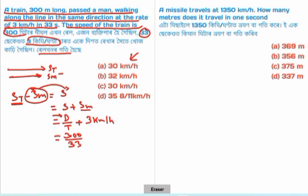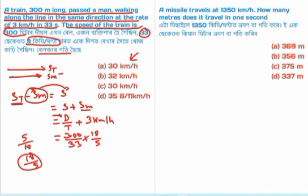To convert meters per second to km per hour, multiply by 18 divided by 5. If you want 1 meter per second in km per hour, it equals 18 by 5. So the conversion factor from m/s to km/h is 18/5.